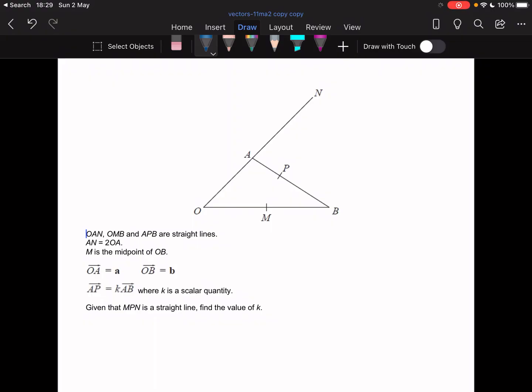M is the midpoint of OB. It's also telling us that OA is equal to a. So I'm going to just do this. And OB is equal to b. So the whole thing is b. And I need to go back and annotate AN.